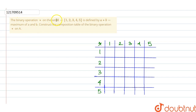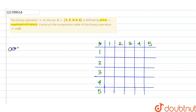Welcome guys. The binary operation on the set A equals to {1, 2, 3, 4, 5} is defined by A composition B equals to maximum of A and B. Construct the composition table of the binary operation on A. So A composition B equals to maximum of A and B.